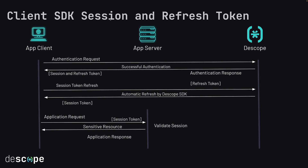Let's look at a scenario when your application uses client SDKs to implement the integration. This sequence diagram covers the session token and refresh token exchanges when your application chooses to integrate using a client SDK. The same sequence diagram applies to integrating using Descope flows as well. Typically, when an application client starts an authentication request and a successful authentication happens, it returns a session token and a refresh token.